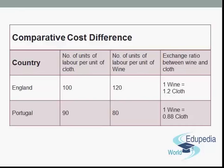In the absence of trade between England and Portugal, one unit of wine commands 1.2 units of cloth in England and 0.88 units of cloth in Portugal respectively. When trade takes place, under the assumption that within each country labour is perfectly mobile between industries, Portugal will gain if it can get anything more than 0.88 units of cloth in exchange for 1 unit of wine, and England will gain if it parts with less than 1.2 units of cloth against 1 unit of wine. Hence, any exchange ratio between 0.88 and 1.2 units of cloth per unit of wine represents a gain for both countries. The actual rate of exchange will be determined by reciprocal demand.